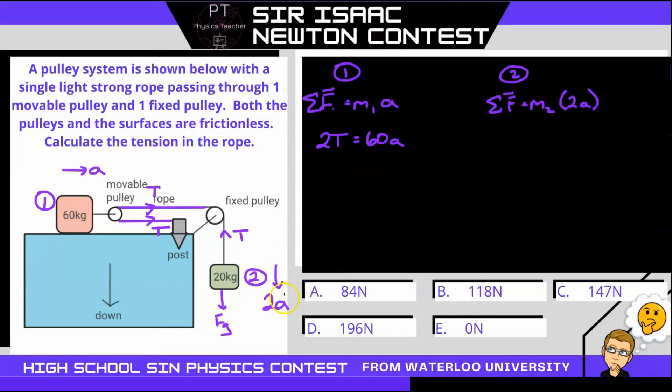Now here, since I have down as our direction of acceleration, that'll be our positive direction, we have gravity minus tension is equal to two times its mass, which is 20, so 40A.